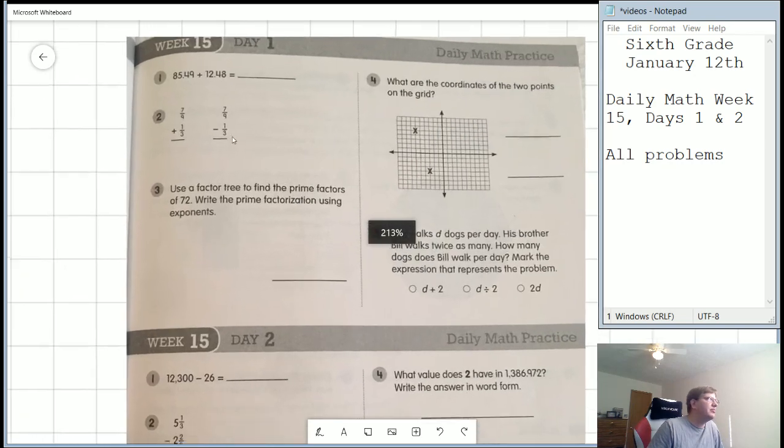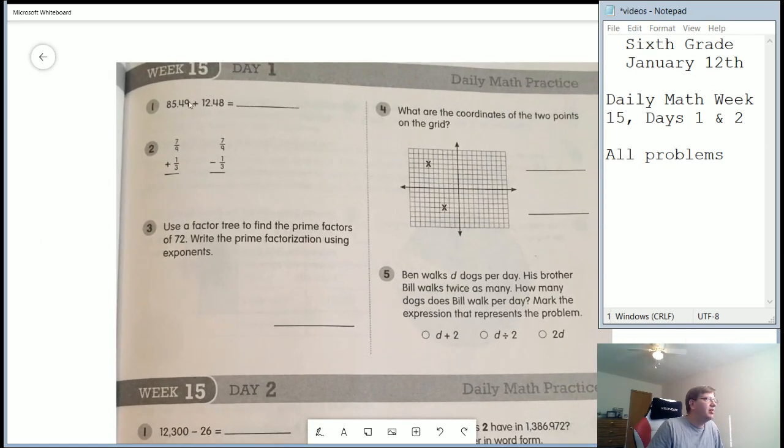Number one. We're working with adding two decimal values together. We need to probably write that problem vertically. So 85.49 can go on the top with the other number down below. We need to make sure we keep track of where a decimal point should go when we are adding.